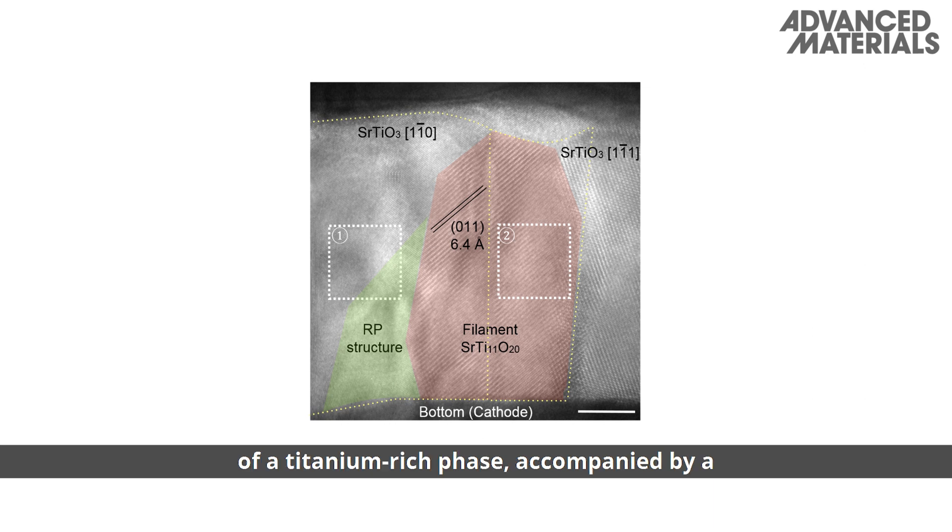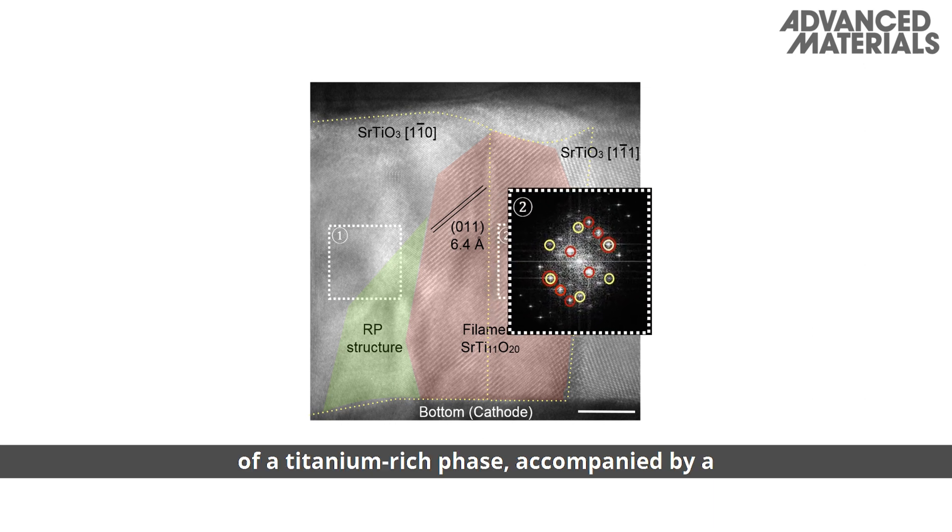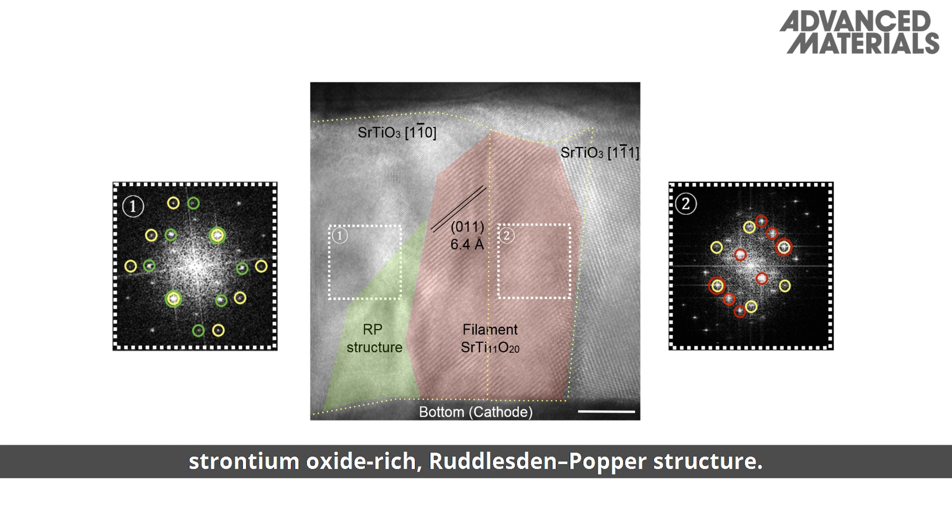The filaments were found to be composed of a titanium-rich phase accompanied by a strontium oxide-rich Ruddlesden-Popper structure.